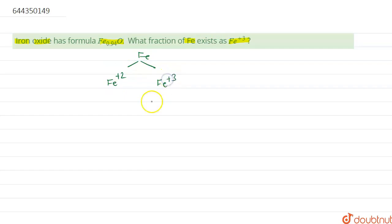Plus 3 state is known as ferric and plus 2 state is known as ferrous.